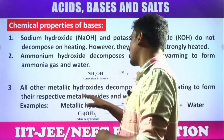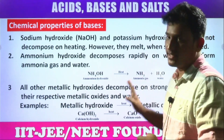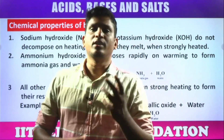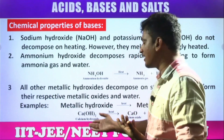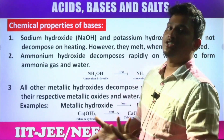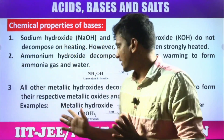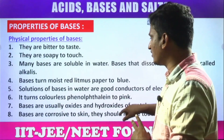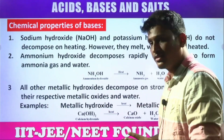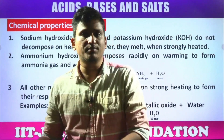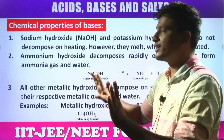All other metallic hydroxides decompose on strong heating to form the respective metallic oxides and water. For example, calcium hydroxide on decomposition gives calcium oxide plus H₂O — the respective metallic oxide. This is a reversible reaction, so it can be reversed. Similarly, magnesium hydroxide forms magnesium oxide plus water. That is how we can synthesize the respective oxides from hydroxides.